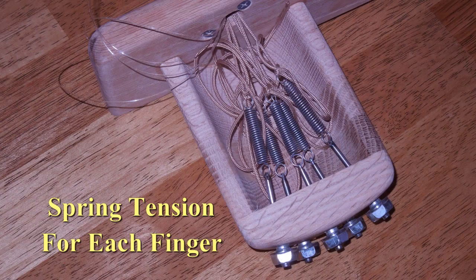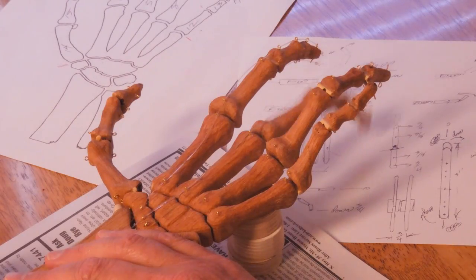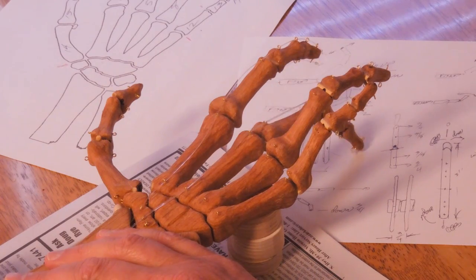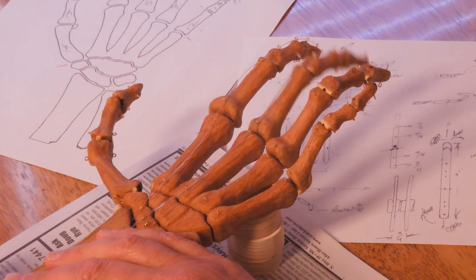Each center cord is spring-loaded to hold the joints together in compression. Pole cords run the length of the fingers, top and bottom, and act as tendons, making the fingers work.